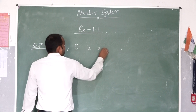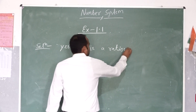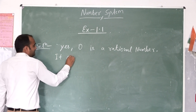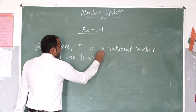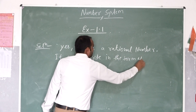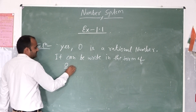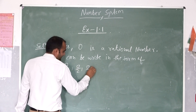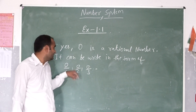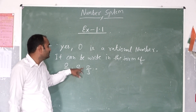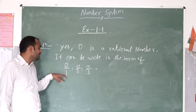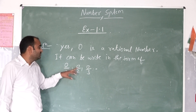Zero is a rational number. It can be written in the form of 0/1, 0/2, 0/3. Where P is 0 and Q is 1, or P is 0 and Q is 2.